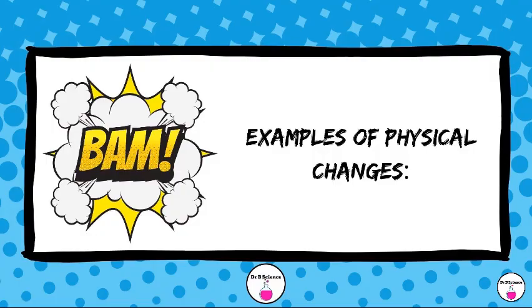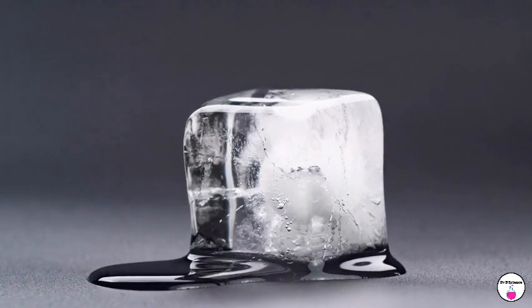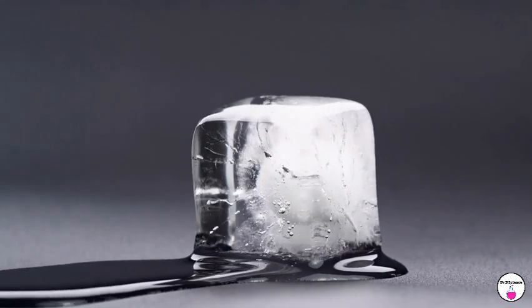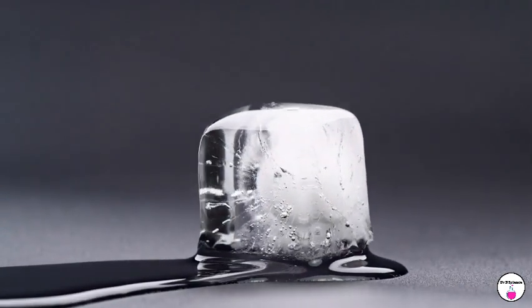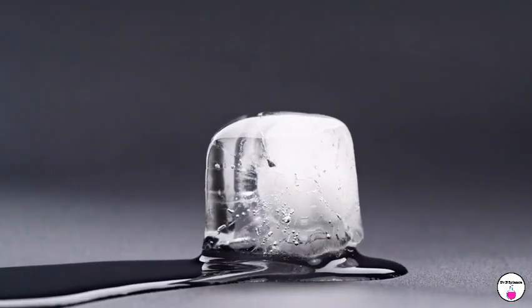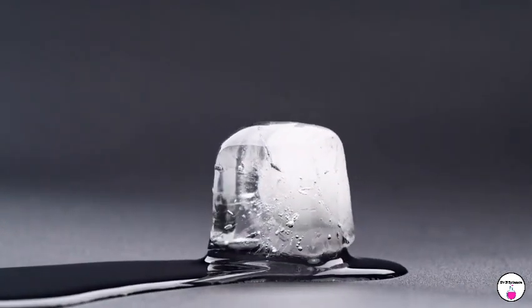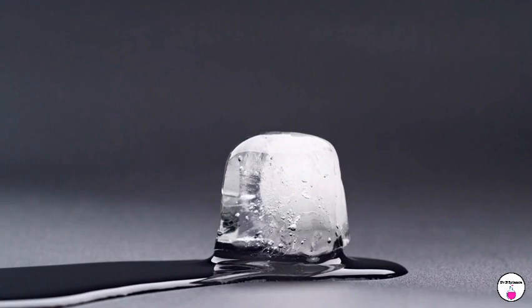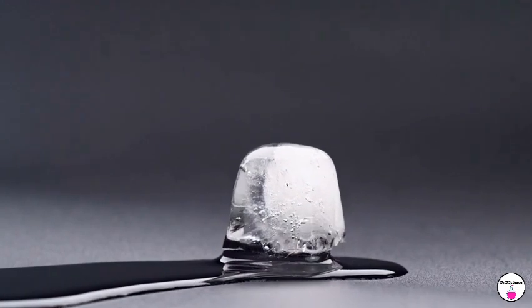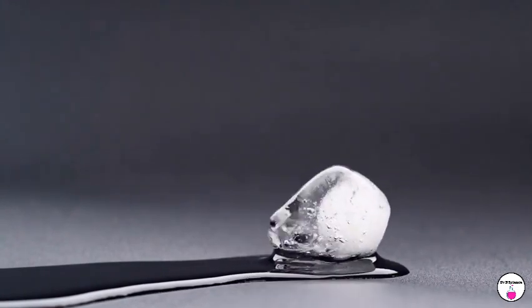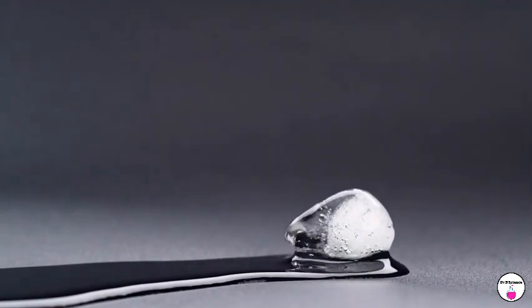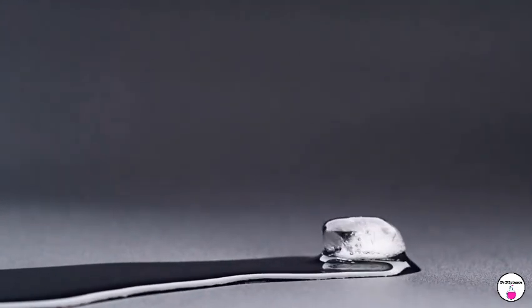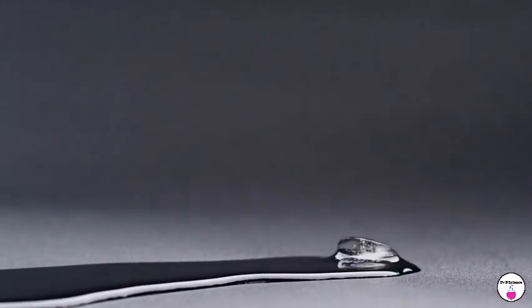Examples of Physical Changes. Melting Ice: When you heat solid ice, it changes into liquid water. This is a physical change because the substance, water molecules, remains the same — only its state changes.